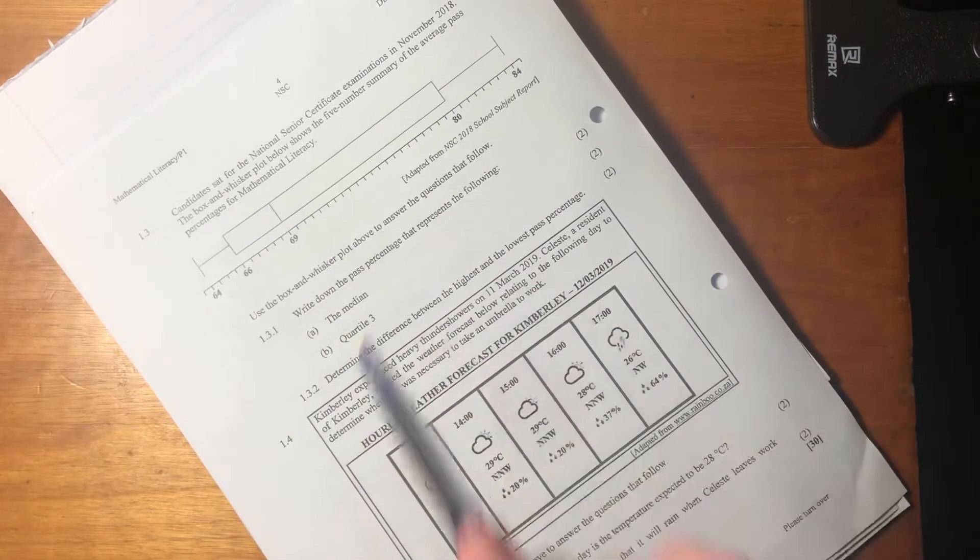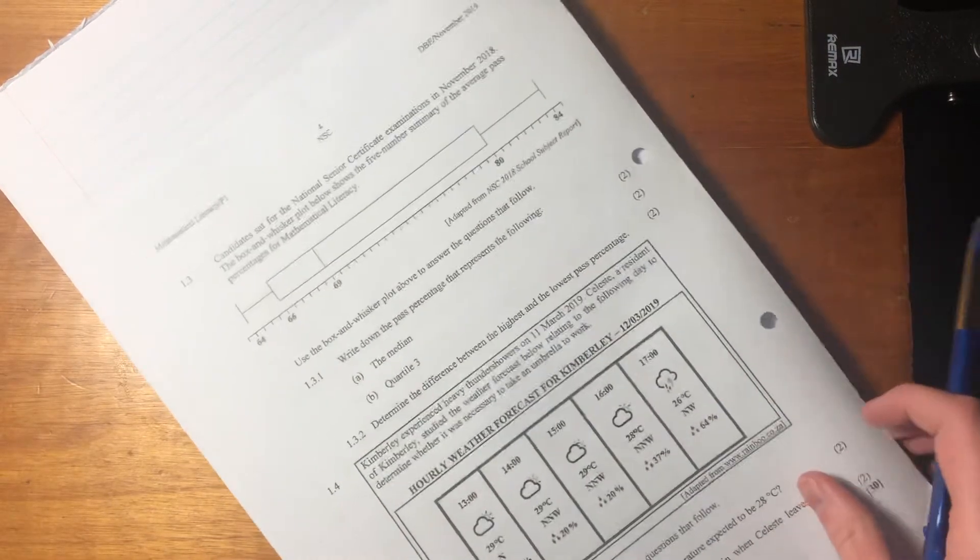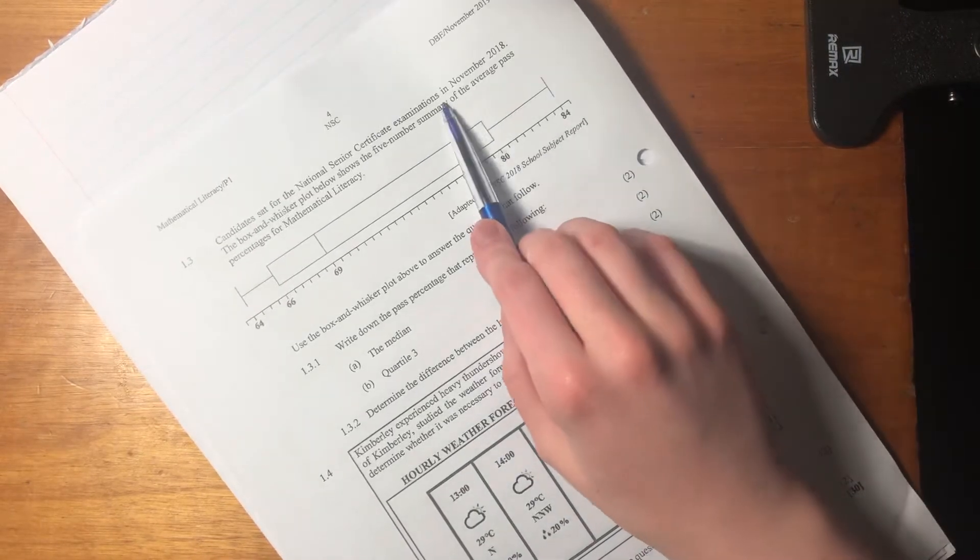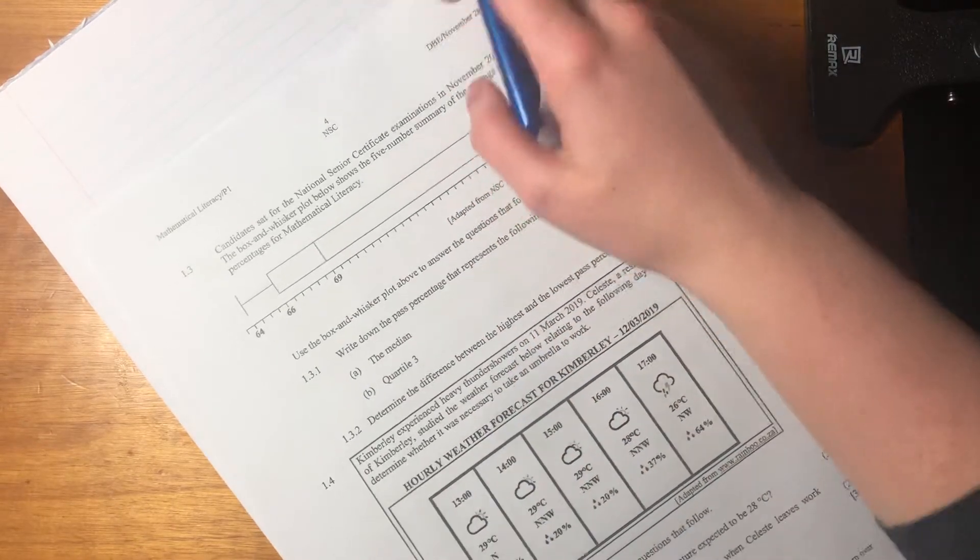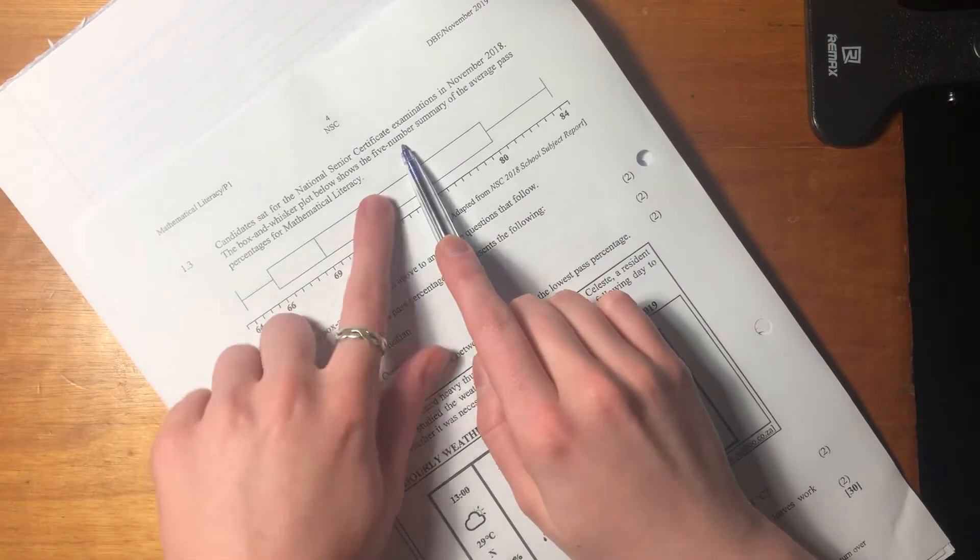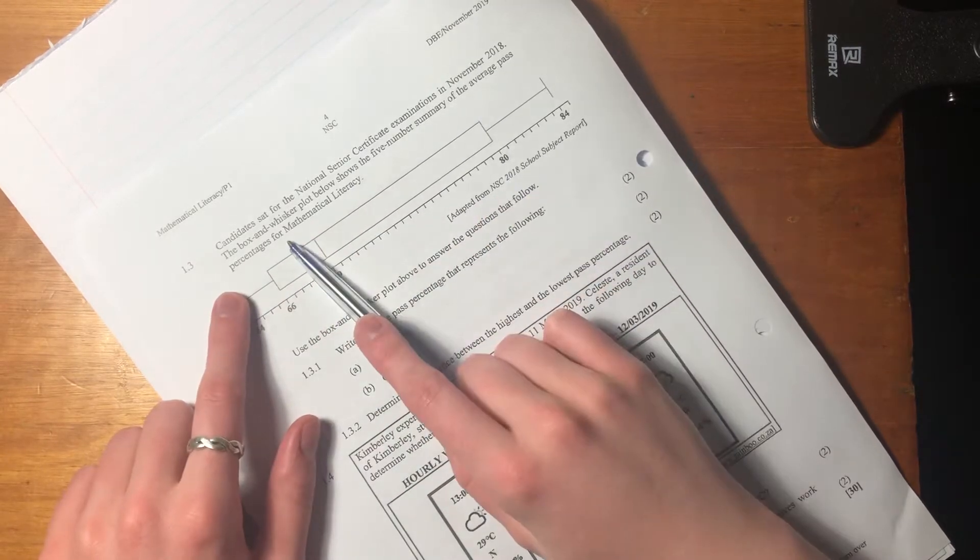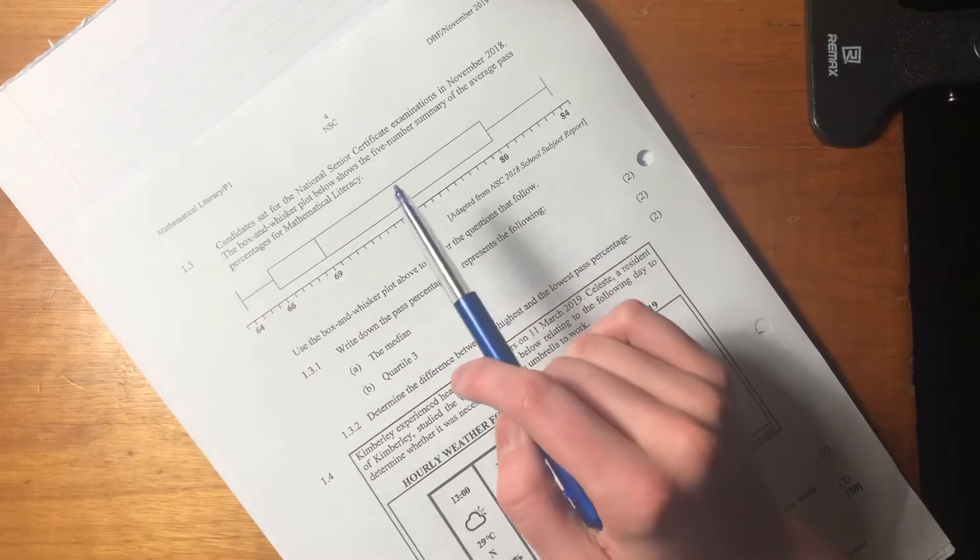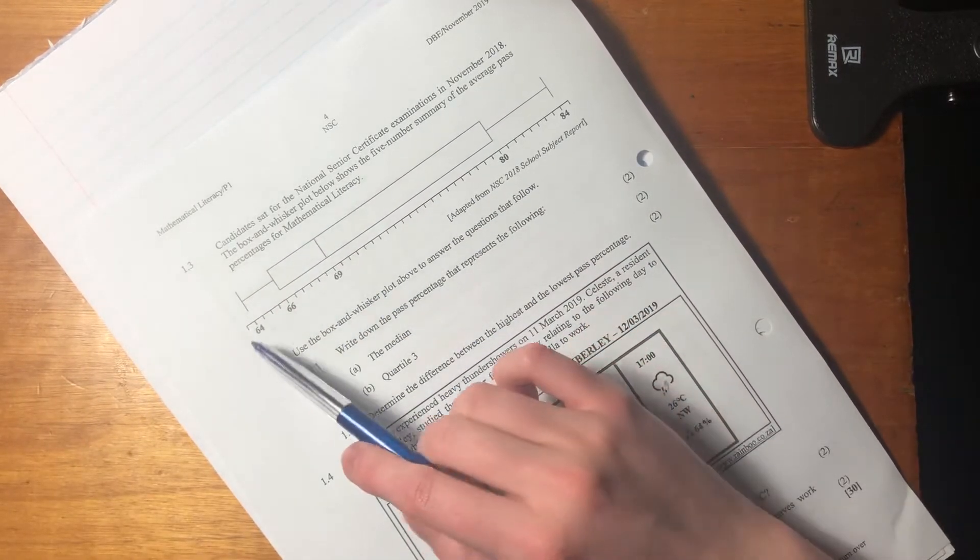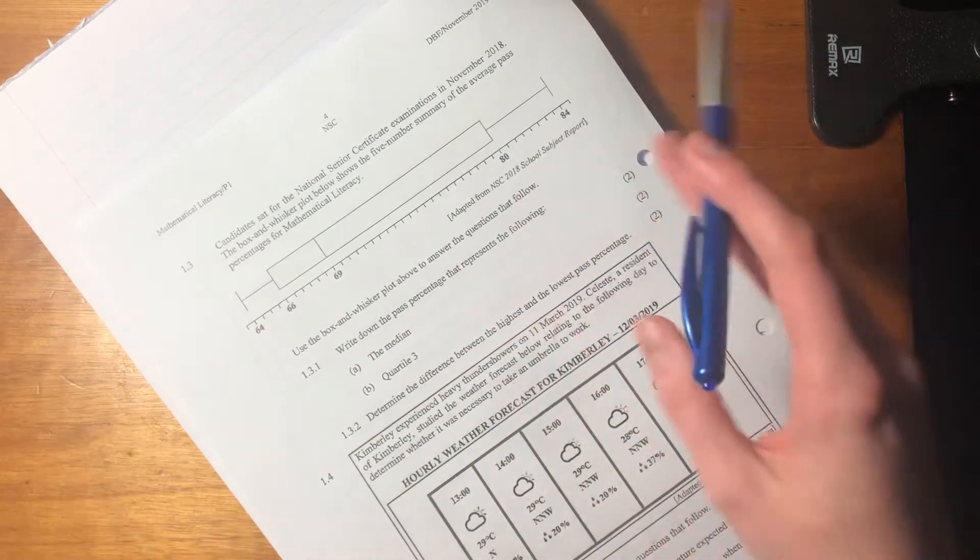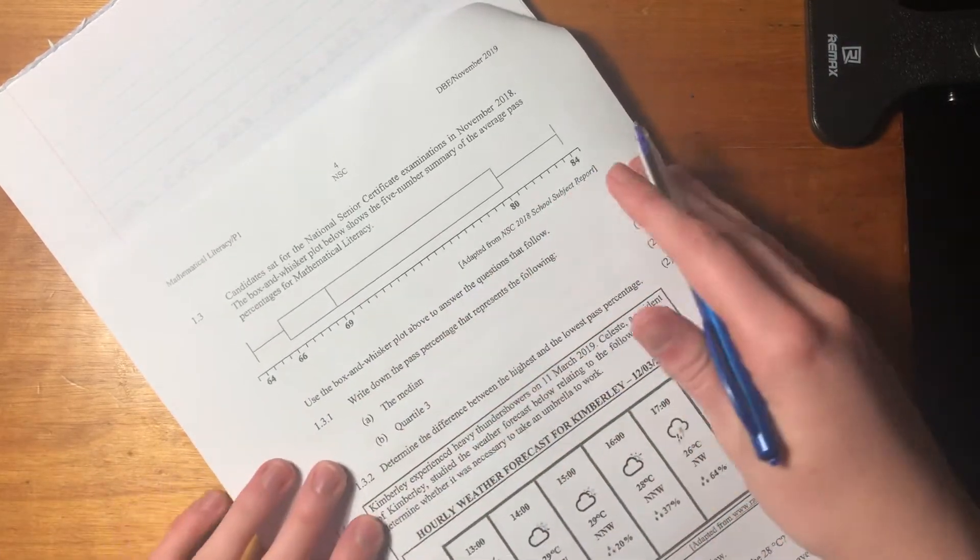So it says candidates sat for the National Senior Certificate Examination in November 2018. The box and whisker plot below shows a five number summary of the average pass percentage for mathematical literacy. So let's just look at these numbers. What's important is that we understand what each of these numbers mean, right?